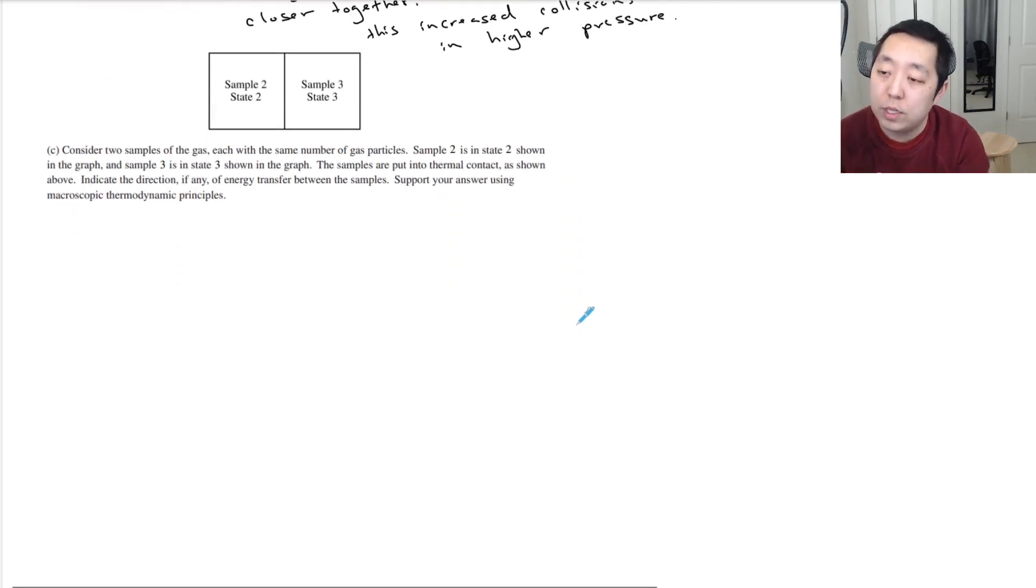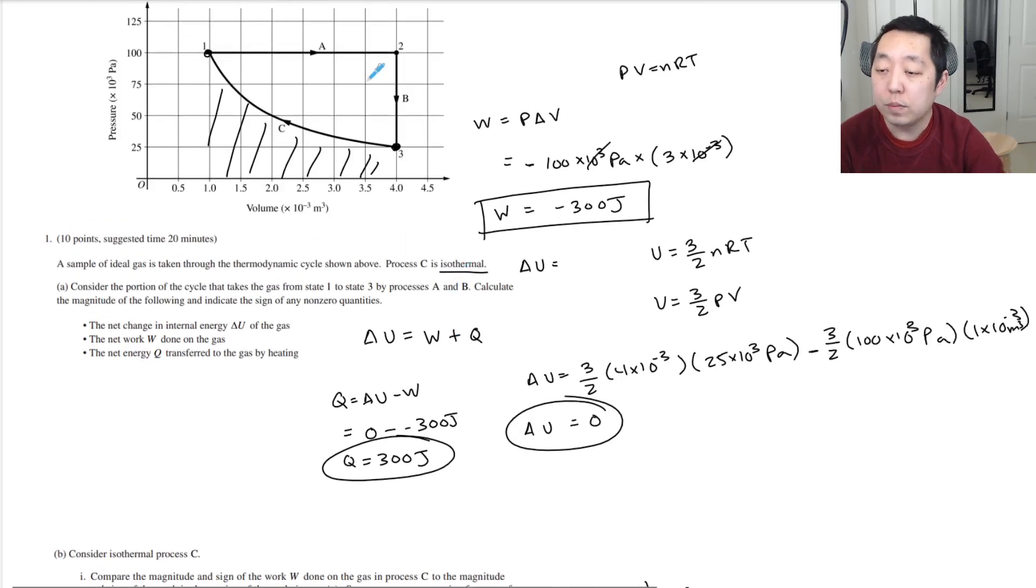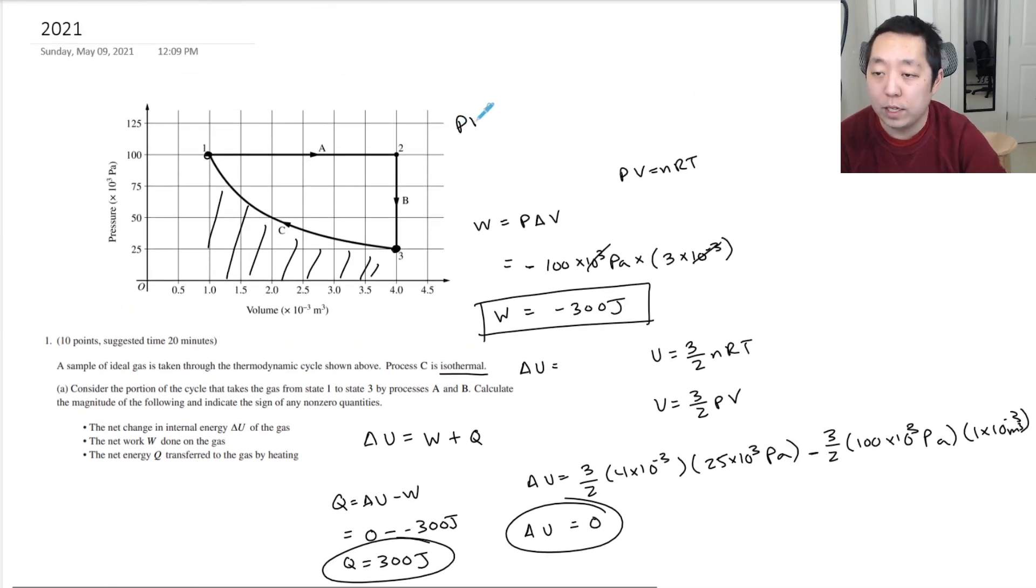Consider two samples of the gas, each with the same number of gas particles. Sample two is in state two. Sample three is in state three, as shown in the graph. The samples are put in a thermal contact. Indicate the direction of, if any, of energy transfer between the samples. Support your answer using macroscopic thermodynamic principles. So state two, it really has to do with the temperature. How does the temperature compare? Basically, between state two and state three, what we've done is we've kept the volume constant, but we've decreased the pressure. But you know that PV equals NRT, or P over T would have to be constant because it would be NR over V, and we're keeping constant volume. So as you decrease the pressure, you decrease the temperature. So state three is at a lower temperature than state two.